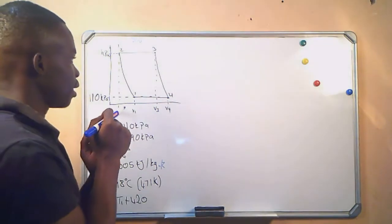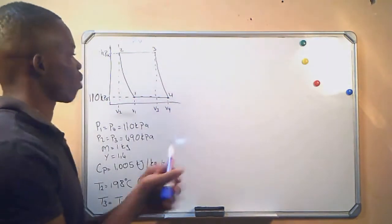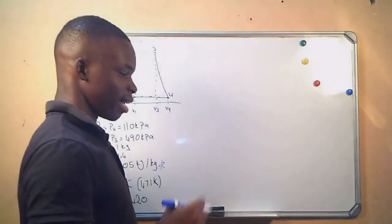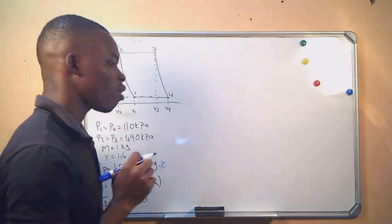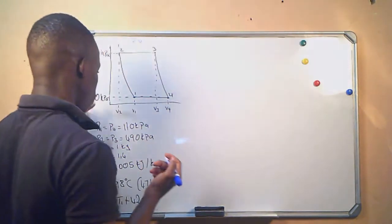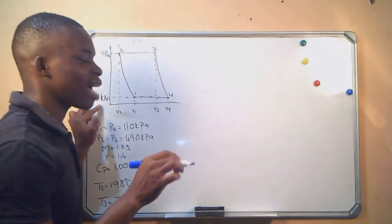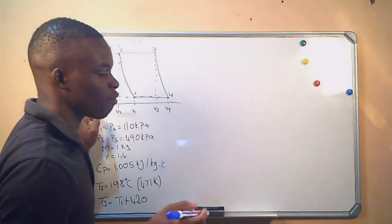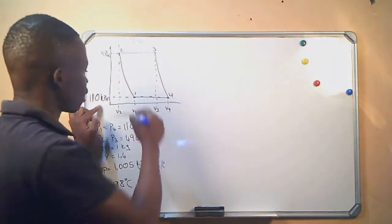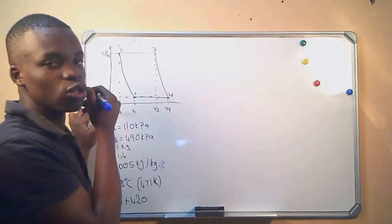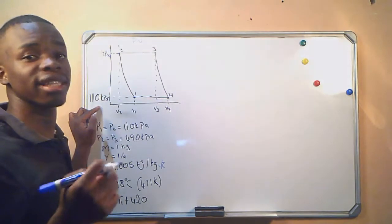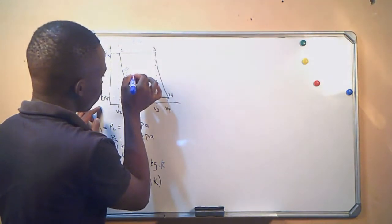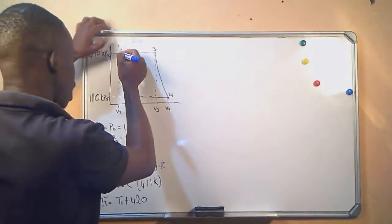Let's look at the PV diagram. The structure of this PV diagram is unusual — we have never seen it before, so let's go through it first. From the given information, 1 kg of air at 110 kPa is compressed isentropically to 490 kPa with a temperature of 198 degrees Celsius. That compression is from one point to the next, and isentropic compression means PV raised to gamma equals a constant.